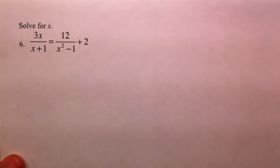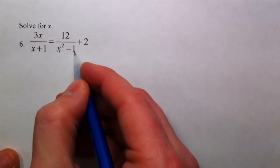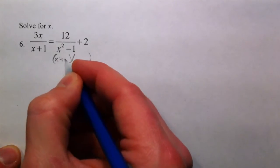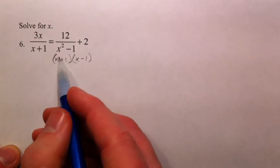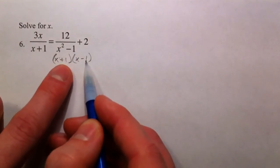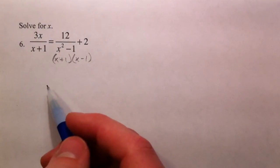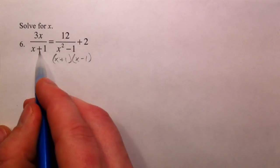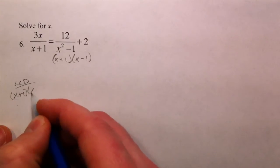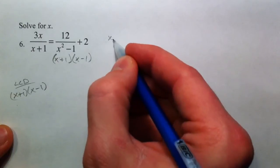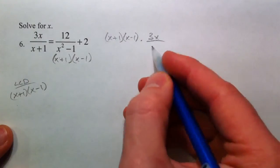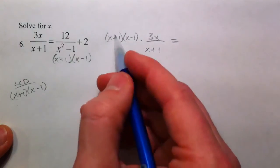The concept is to factor x squared minus 1, which is the difference of two squares. It factors into x plus 1 times x minus 1, because the plus and minus always cancel out. The factors multiply to negative 1 and add to 0, since there's no x term in the middle. Because this one already has an x plus 1, the lowest common denominator is x plus 1 times x minus 1. So x plus 1 times x minus 1 gets multiplied on the left by 3x over x plus 1 — the x plus ones cancel out.